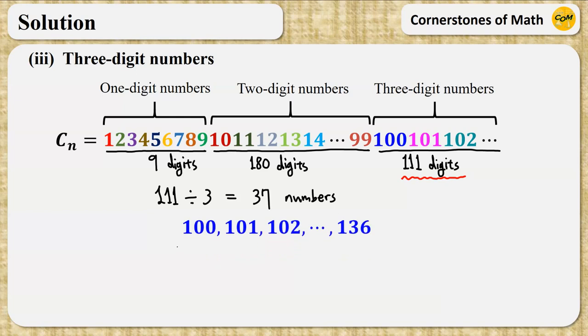That is, we need the numbers from 100 to 136. Therefore, n equals 136.